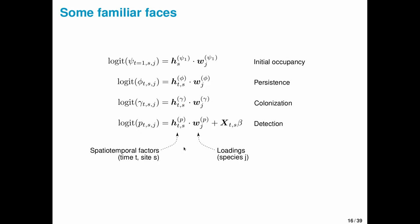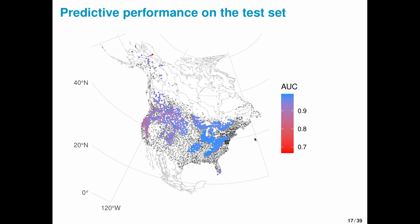If we zoom in on how these parameters are actually computed, we'll see some familiar faces. There's a dot product here that looks a lot like dot products in other JSDMs. So here for our detection model, for example, we're taking a dot product between some spatiotemporal factors, these are latent, and some species-specific loadings, also latent. Worth pointing out here that we can include linear combinations of covariates just like we would typically do in a GLM.